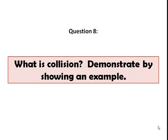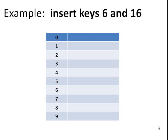Number eight, what is collision? Demonstrate by showing an example. A collision in a hash table is a phenomenon that occurs when a hash function maps two different keys to the same index. An example would be inserting keys 6 and 16 in your hash table of size 10. Using the standard hash function, 6 modulo 10 will give you 6.